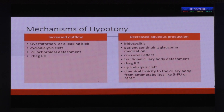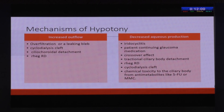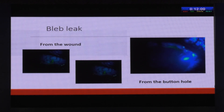In terms of mechanisms, hypotony could be either increased outflow — occurring with over-filtration or a leaking bleb — or it could be due to decreased aqueous production. The main causes of decreased production are iridocyclitis and patients continuing glaucoma medication. Some patients continue anti-glaucoma medications and acetazolamide tablets following surgery, and this could be the reason for the hypotony. Very rarely it could be due to chemical toxicity to the ciliary body from anti-metabolites.